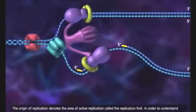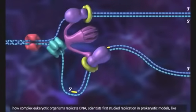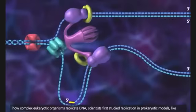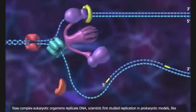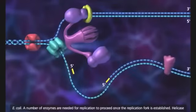In order to understand how complex eukaryotic organisms replicate DNA, scientists first studied replication in prokaryotic models, like E. coli.